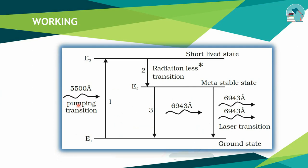When the flash tube is activated, it supplies energy — approximately 5,500 Angstroms. The ground level chromium ions absorb this energy and get excited. The ions are pumped to an excited state.